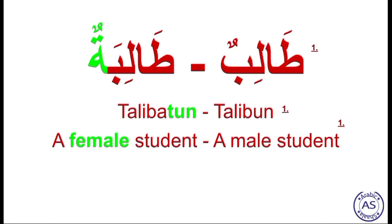Talibun — a male student. Talibun से female कैसे हुआ? Last letter ba का symbol फथा से change कर दिया: Taliba। और last में round-ta add कर दिया। Talibatun — a female student। Talibun: a male student. Talibatun: a female student।